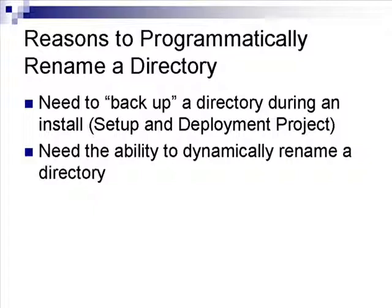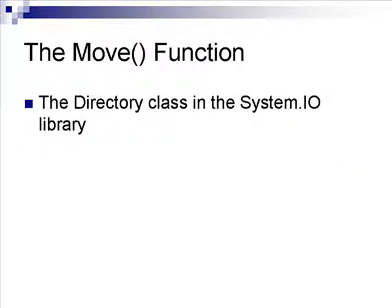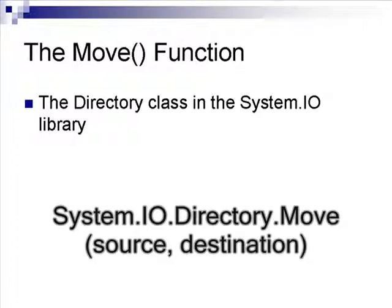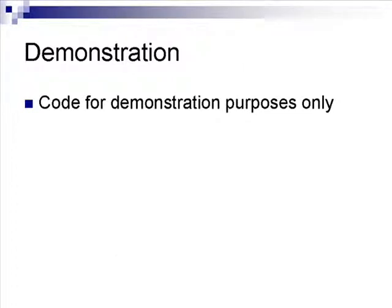.NET has a class that allows you to programmatically rename a directory. The Directory class in the System.IO library contains a function called Move that will rename a directory. The Move function accepts two parameters: the source and the destination. The source is the directory to rename and the destination is the new name of the directory. This code will illustrate how to use the Move function of the Directory class to rename a directory.